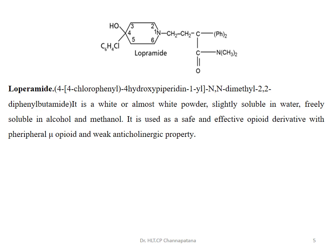The next drug is loperamide. Loperamide also contains a piperidine ring. It is 4-(4-chlorophenyl)-4-hydroxy-piperidine-1-yl-N,N-dimethyl-2,2-diphenylbutanamide. It is used as a safe and effective opiate derivative with peripheral mu-opiate receptor activity and weak anticholinergic properties.